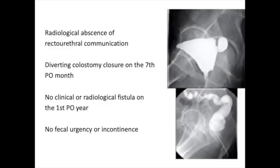Radiological examinations confirm the absence of rectourethral communication. The diverting colostomy is then closed on the 7th postoperative month. One year after surgery, the patient remains asymptomatic without fecal incontinence.